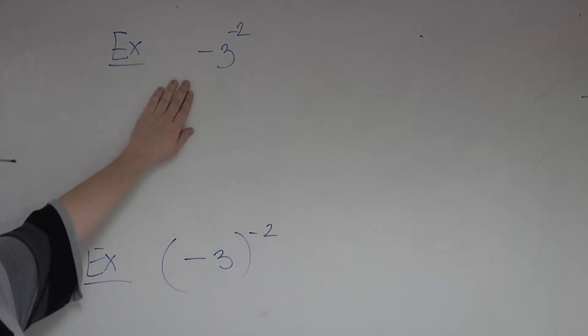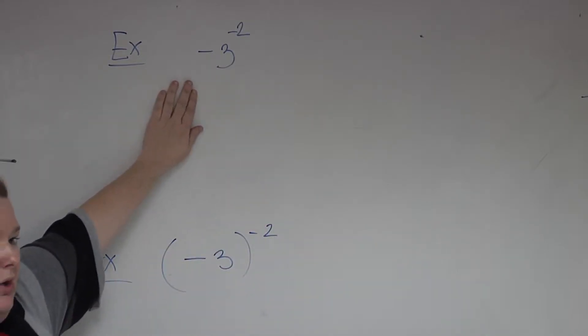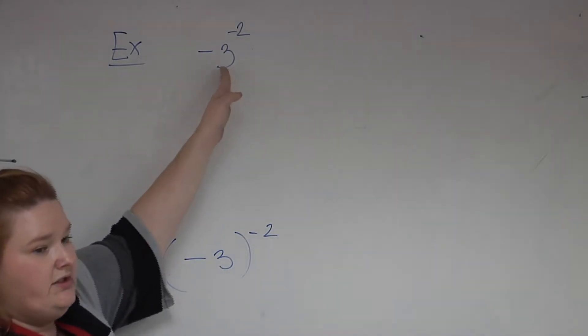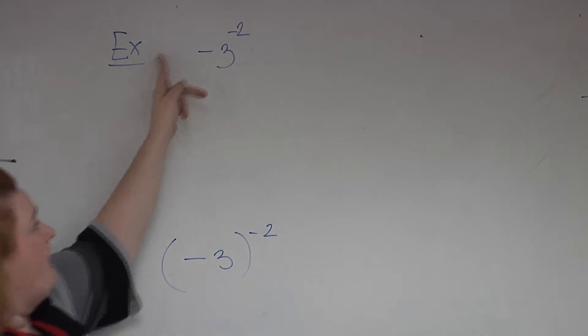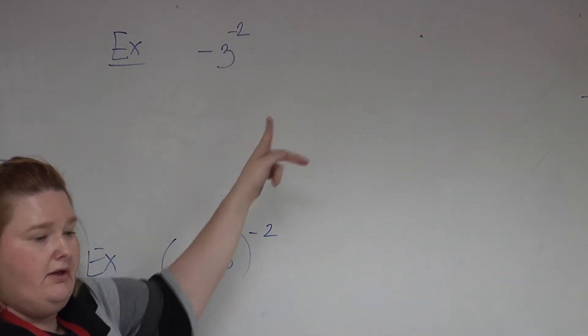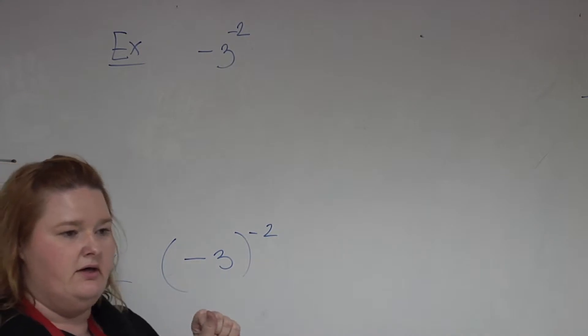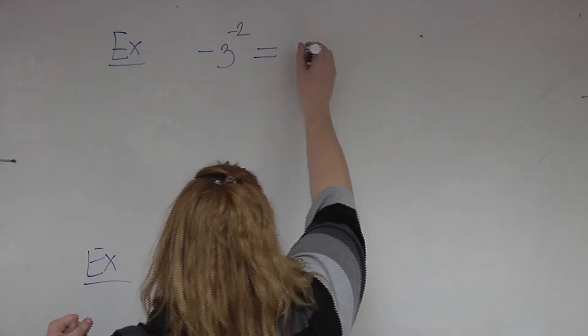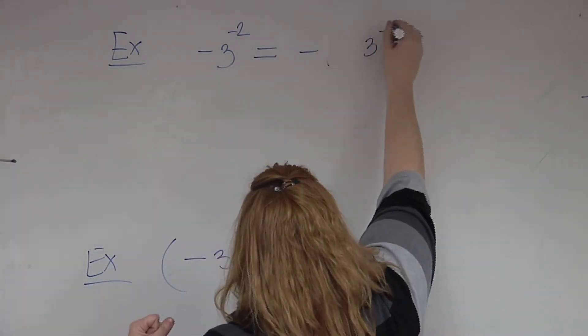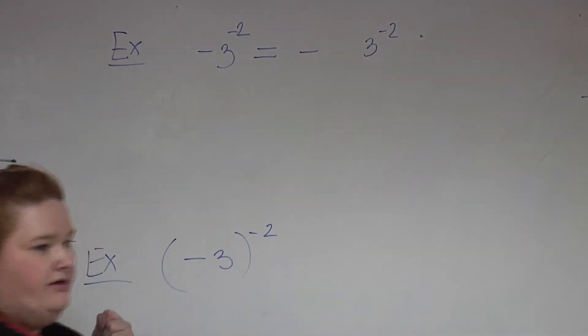But on this one, the power only goes to the first thing to the left. So it's only going to go to the 3. It's not going to go to the negative. So when I'm rewriting this problem, and I've got this negative power, that negative power is only going to go to the 3. So tactically, my problem, I'm really going to expand it out, looks like this. Negative 3 to the negative 2.